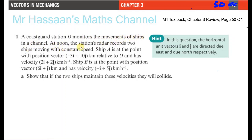A Coast Guard Station O monitors the movements of ships in a channel. At noon the station's radar records two ships moving with constant speed. Ship A is at position vector −3i + 10j kilometres relative to O, with velocity 2i + 2j km/h. Ship B is at position 6i + j kilometres with velocity −i + 5j km/h. Show that if both ships maintain these velocities they will collide.